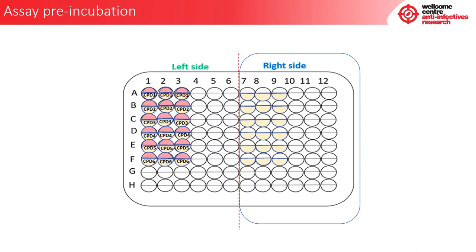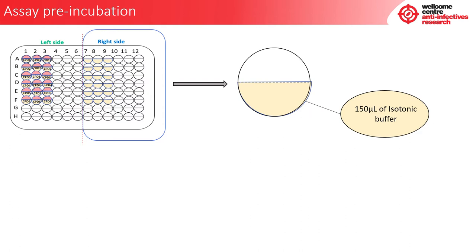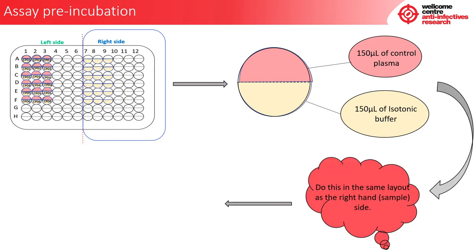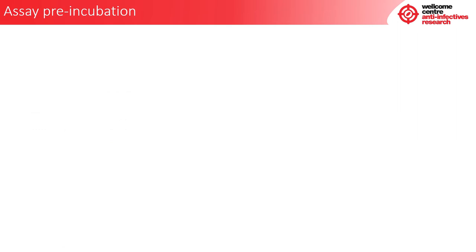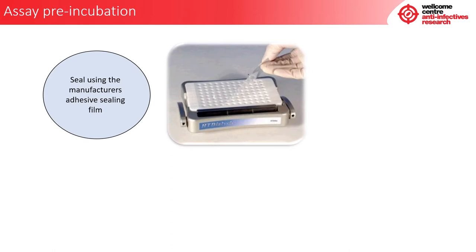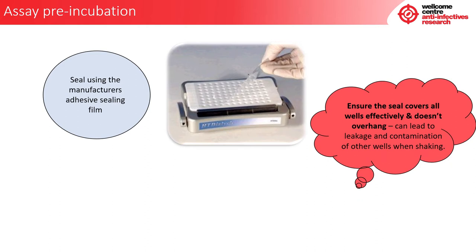Now we are going to deal with the right-hand side of the dialysis block, also known as the control side. On the right side we have 150 microlitres of isotonic buffer in the bottom chamber of each well. We will then dispense 150 microlitres of control plasma into the top chamber of the relevant wells, in the same layout as the sample side. Once sample has been loaded into both sides of the dialysis block, it is now ready to be sealed using the manufacturer's adhesive sealing film. Ensure that the seal covers all wells effectively and doesn't overhang, as this can lead to leakage and contamination of other wells when shaking.